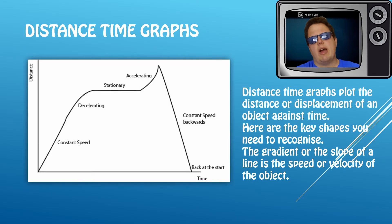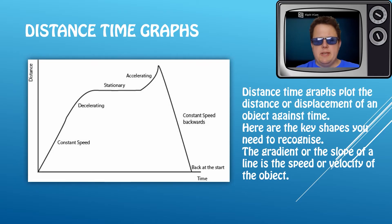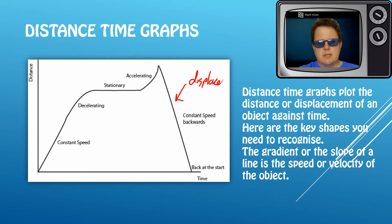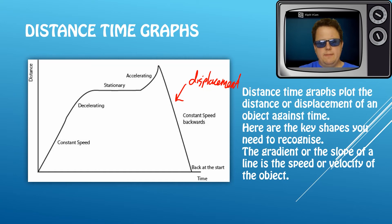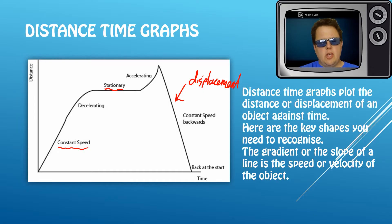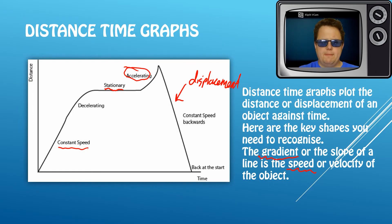On to our first graphs: distance-time graphs or displacement-time graphs. Technically, if a line goes downwards it becomes a displacement-time graph because we care about direction. The key things to know are: any straight line means constant speed; a horizontal line means stationary; curved lines indicate acceleration. The steeper the line, the faster the speed, because the gradient of the line is the speed — or velocity if we care about direction.